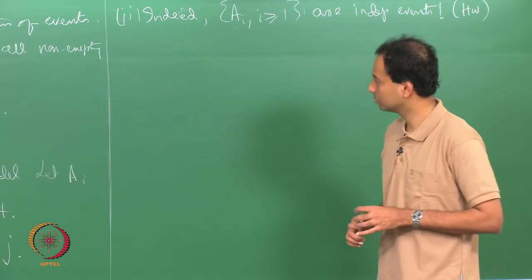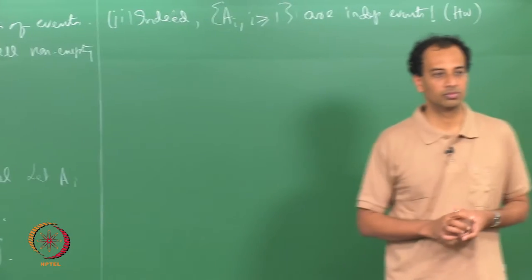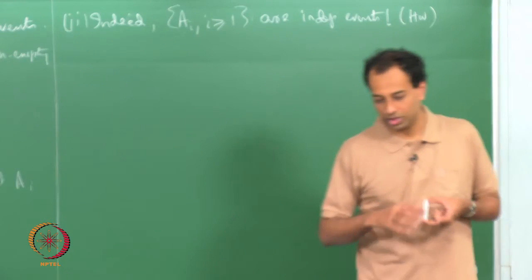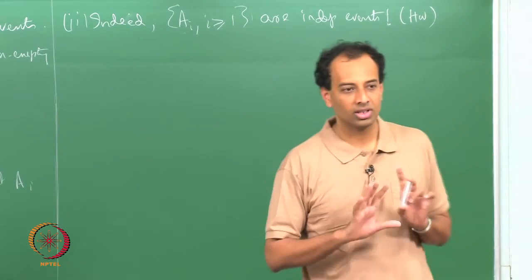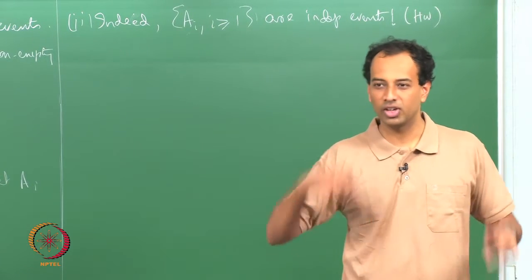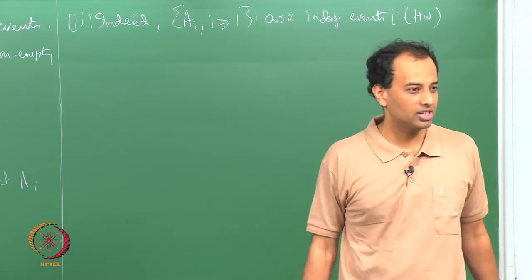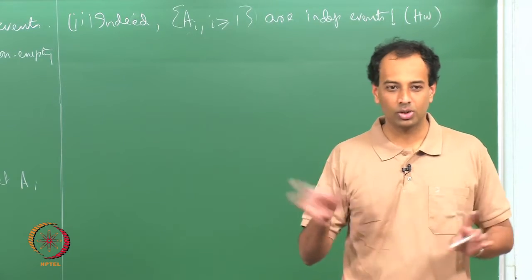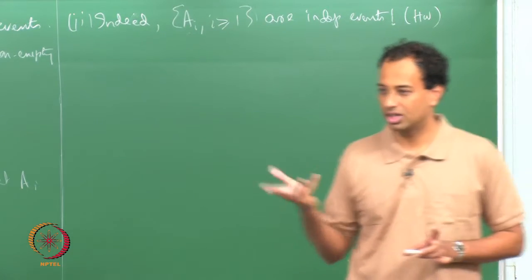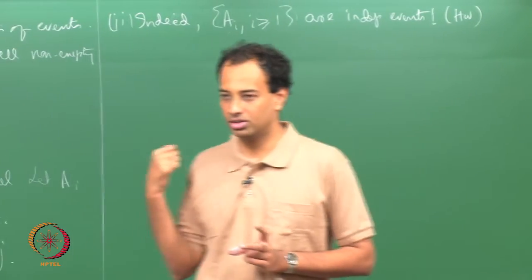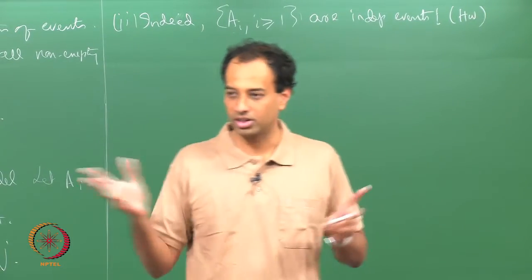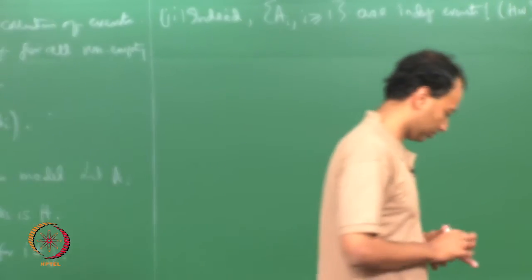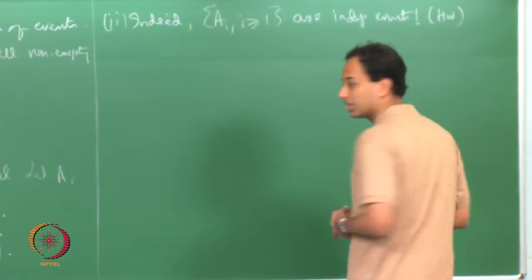Now you can talk about independence of an arbitrary collection of events. If I give you any collection — possibly even an uncountable collection — what you do is look at all finite sub-collections and check whether the intersection probability factors into the product of individual probabilities.